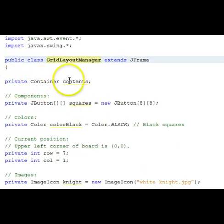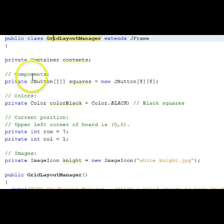We declare our container called contents. Our components will be a two-dimensional array of J buttons called squares. And we allocate an 8 by 8 dimensioned array for them.